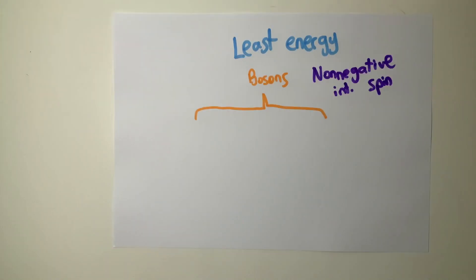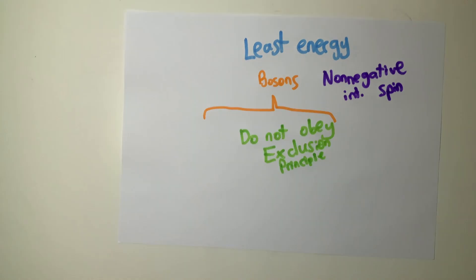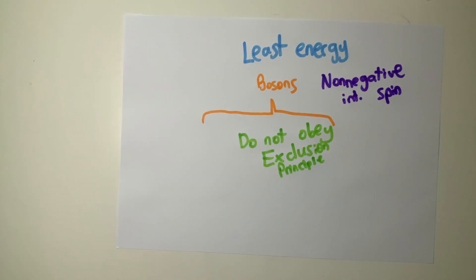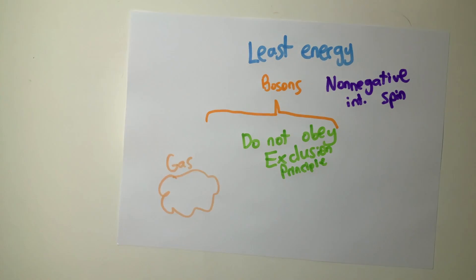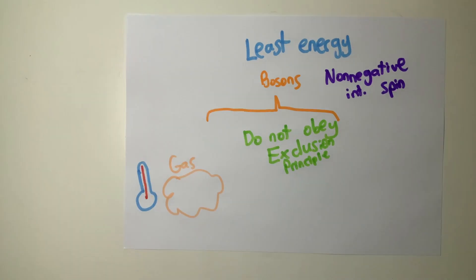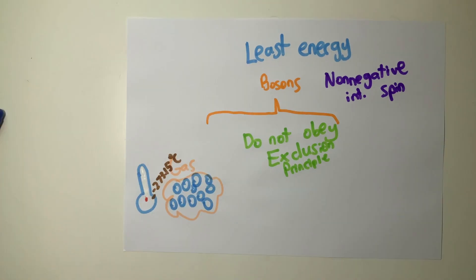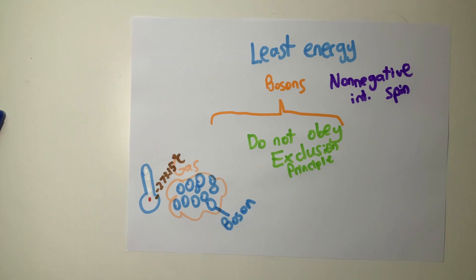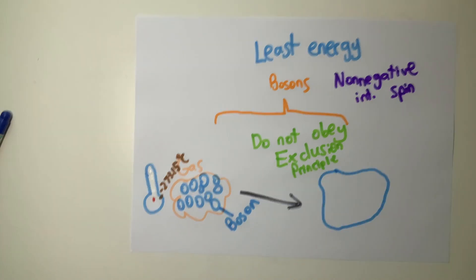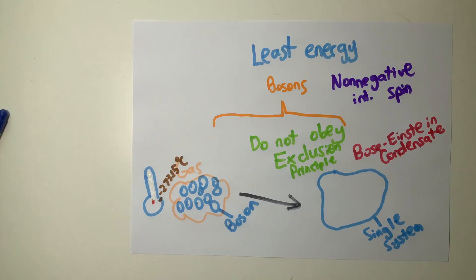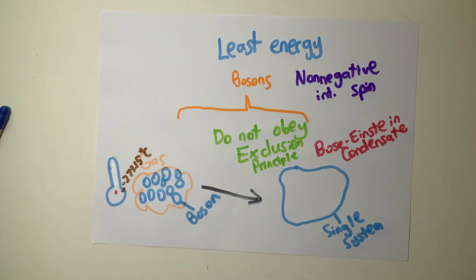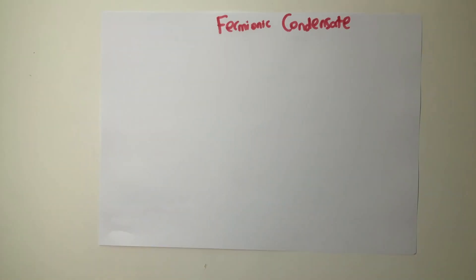Now, let us journey backwards. Bosons are another large umbrella category of fundamental particles that have a quantum spin of non-negative integers. Unlike fermions, bosons do not obey the exclusion principle. If a gas is cooled significantly, the atoms in the substance undergo a significant change. The bosons and the substance combine into a single quantum system.